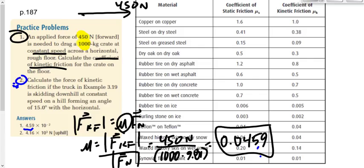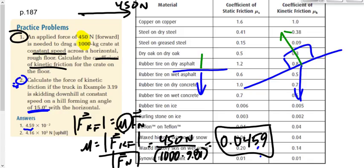Why did I not assign question number two? It's downhill at constant speed — you're on an angle. If you're on an angle, here's gravity and here's the normal force. On a flat surface the normal force balances gravity, but at an angle the normal force doesn't even point in the opposite direction, so it doesn't balance gravity. We don't know what the normal force is when the angle is 15 degrees. We'll learn to do that later.